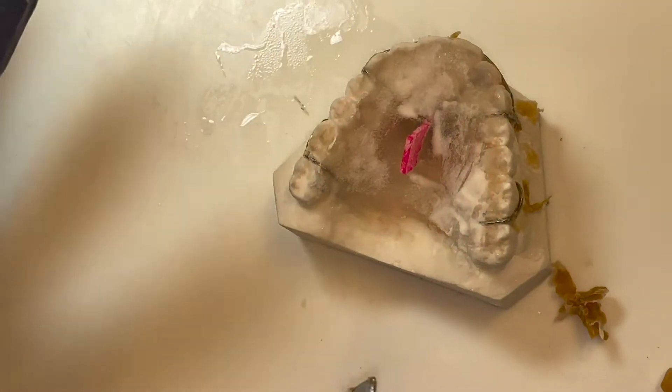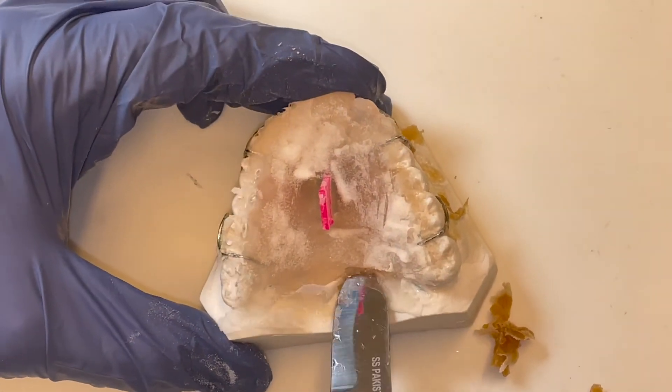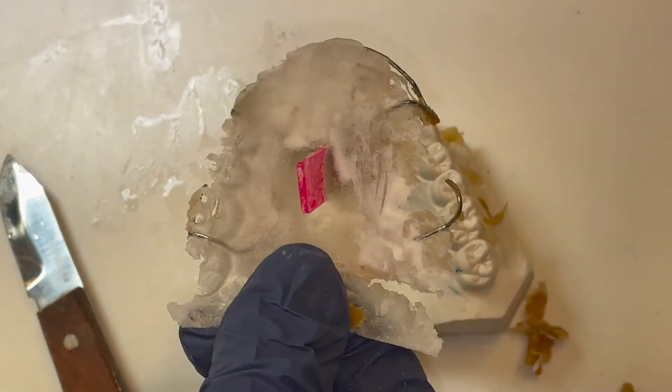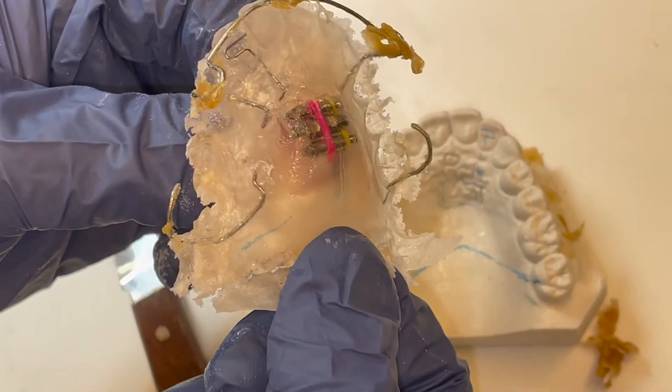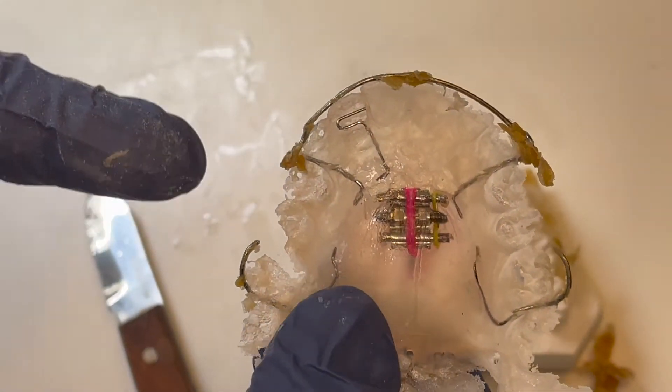When removing the acrylic plate off of the model, use a Murphy knife from the posterior section. If you use tinfoil substitute, your acrylic should come off relatively easy. You want to make sure that all the wires are embedded in the acrylic and not exposed underneath.